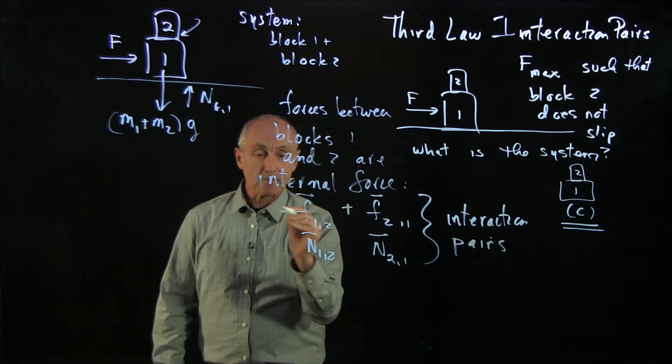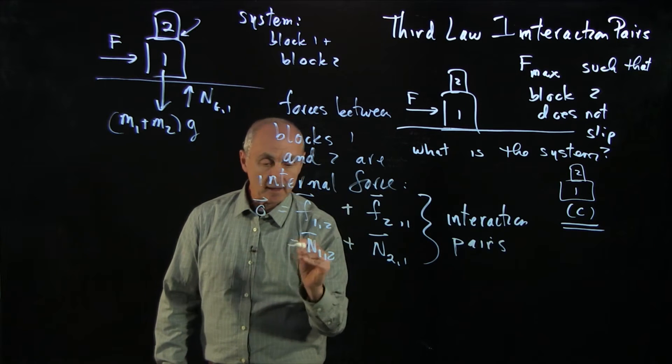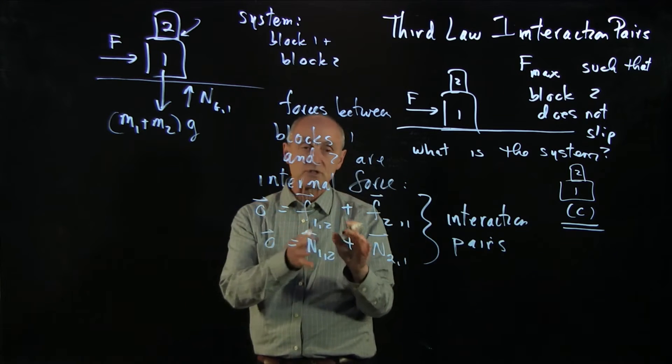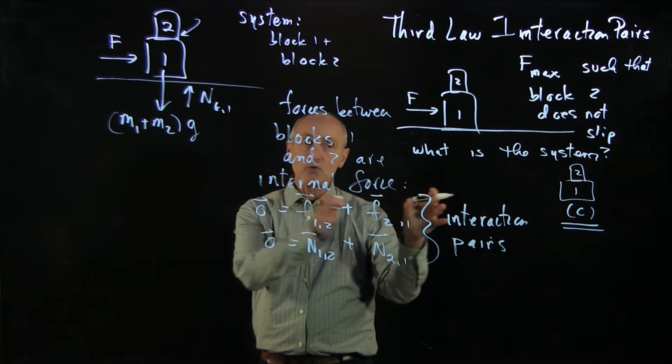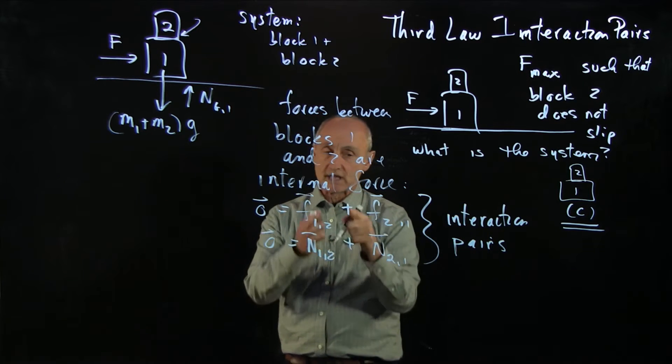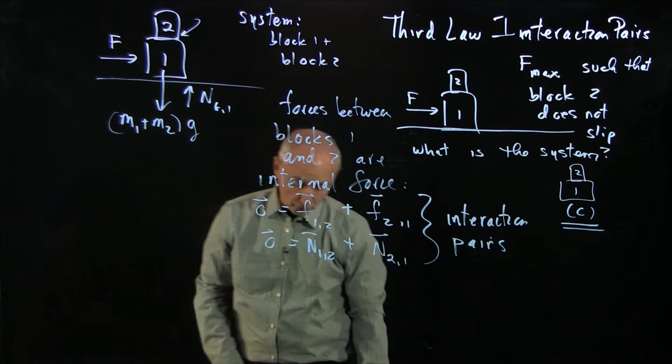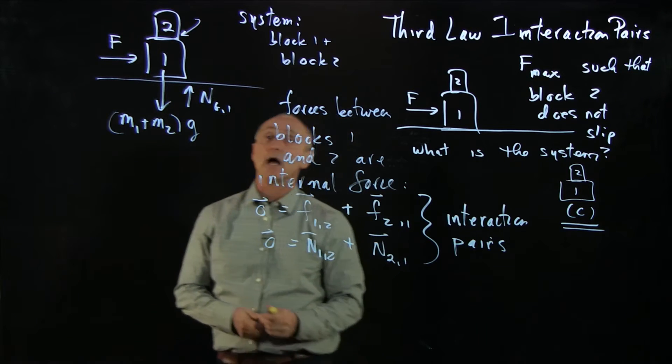And the sum of them are zero. And so we see that all internal forces form Newton's third law interaction pairs. And the vector sum of them are zero. And that's why I don't need those internal forces on my free body diagram.